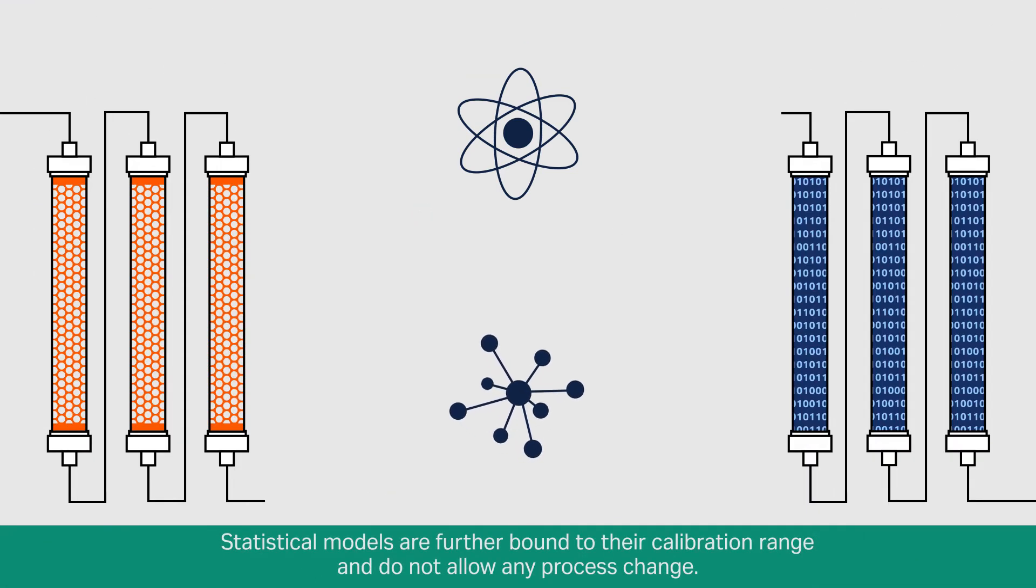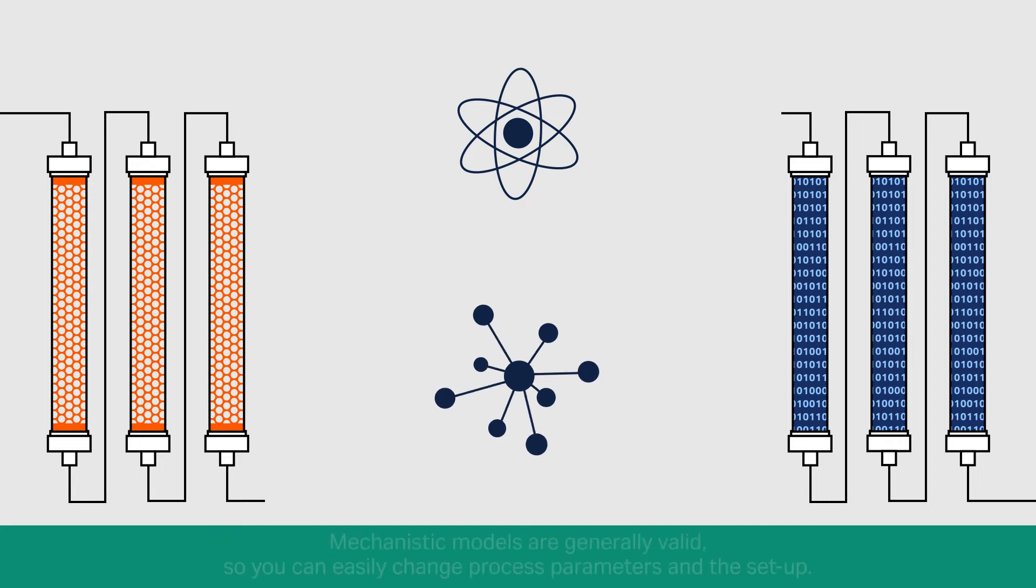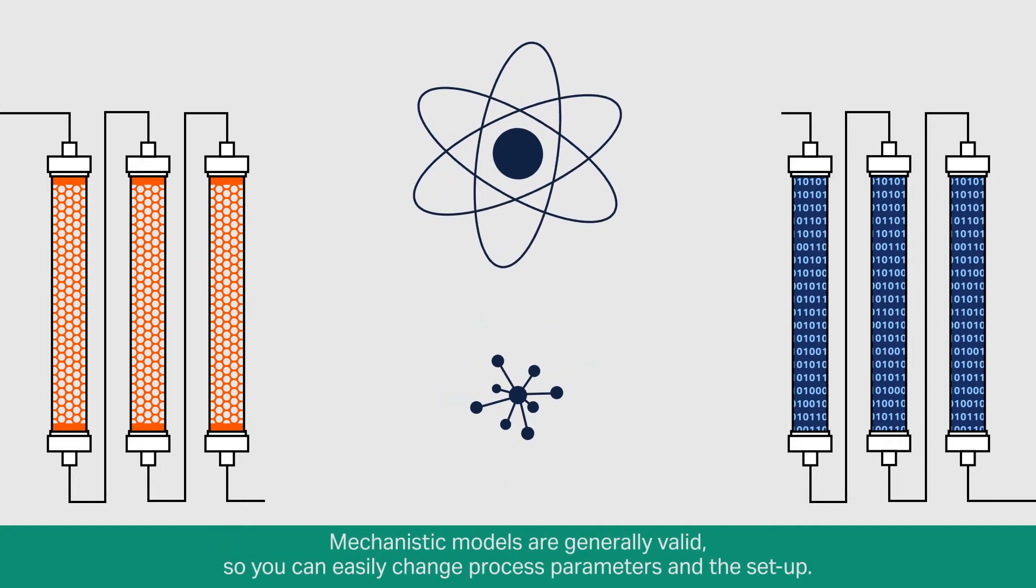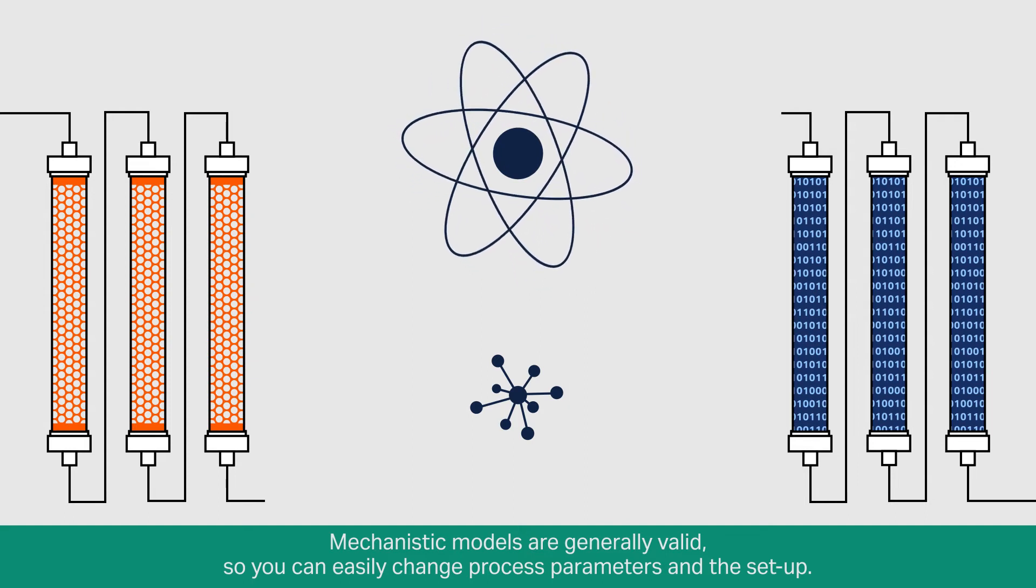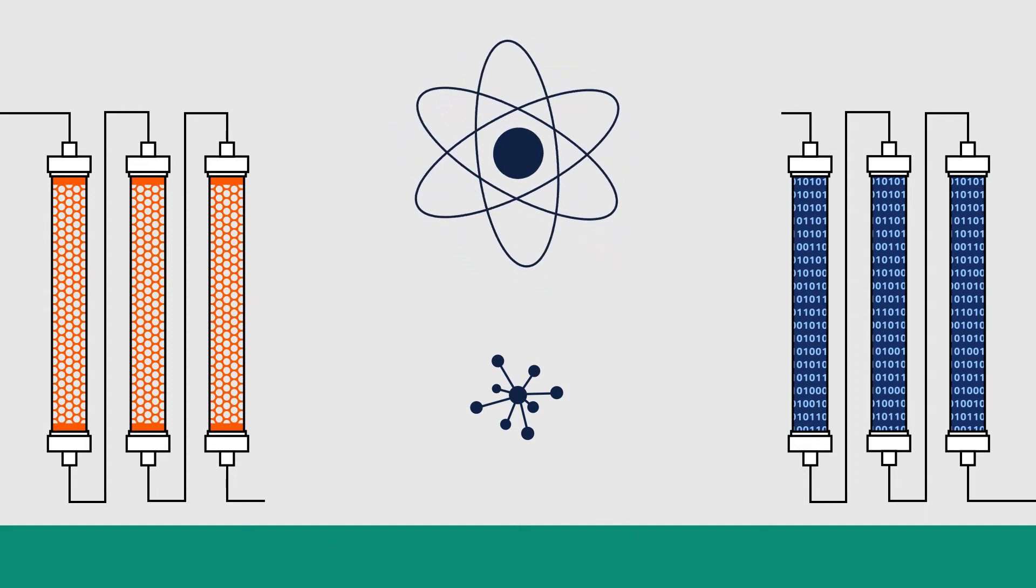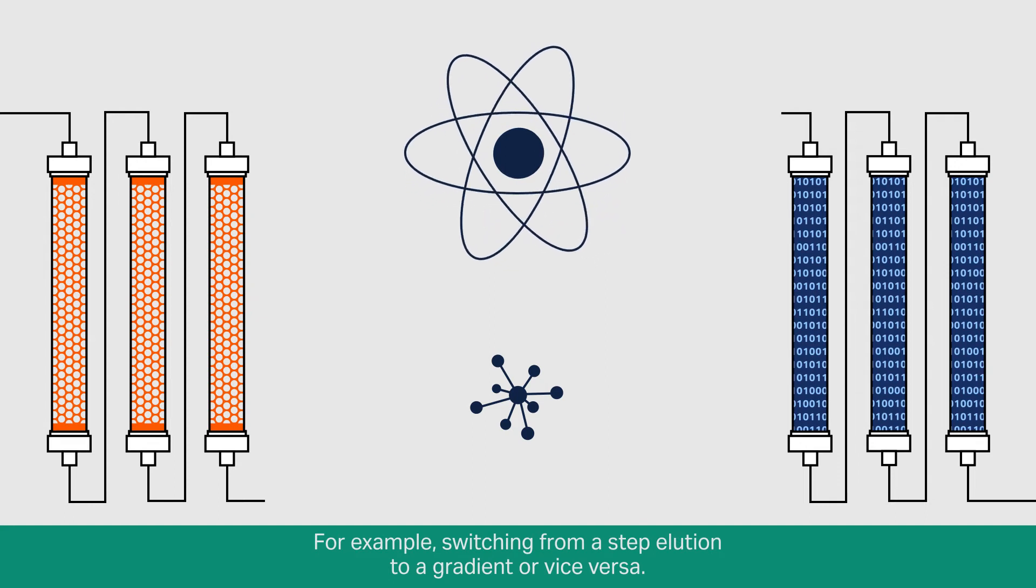Statistical models are further bound to their calibration range and do not allow any process change. Mechanistic models are generally valid, so you can easily change process parameters and the setup. For example, switching from a step elution to a gradient or vice versa.